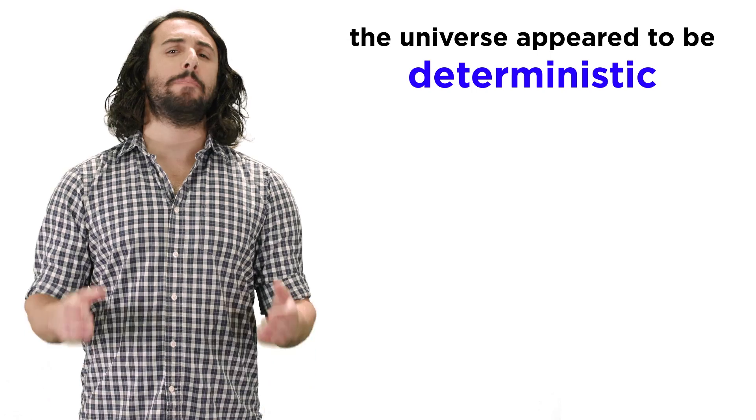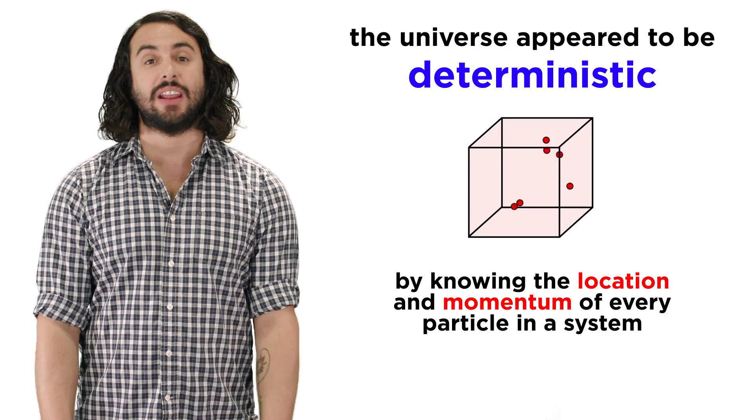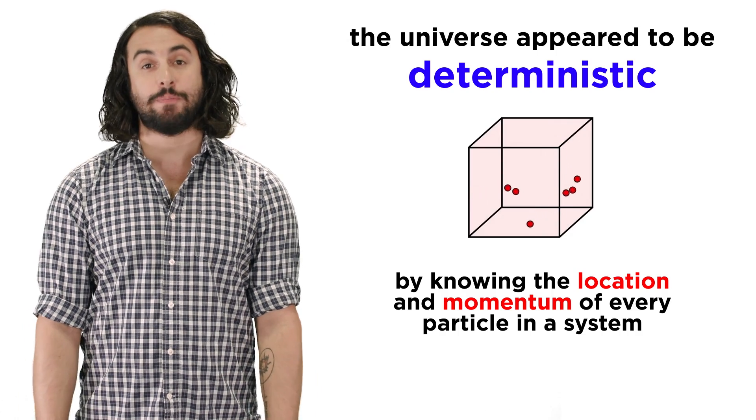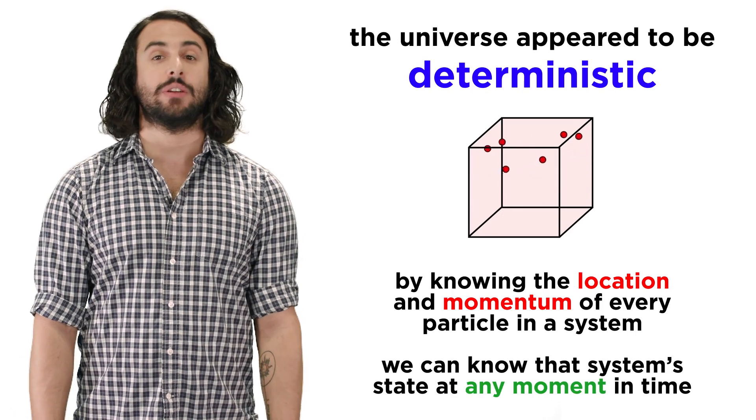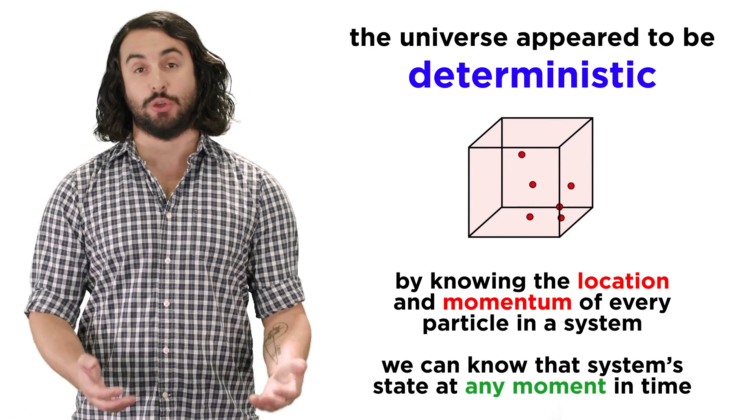The universe appeared to be completely deterministic, meaning that if we could know the precise location and momentum of every particle in a system, as well as the laws that govern their motion, we could know their location and momentum at any time in the past or future.